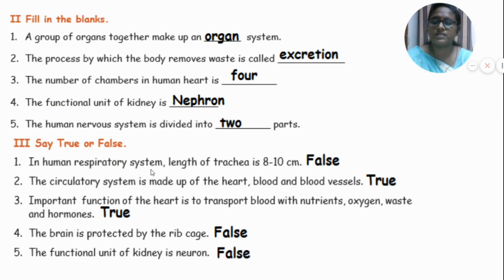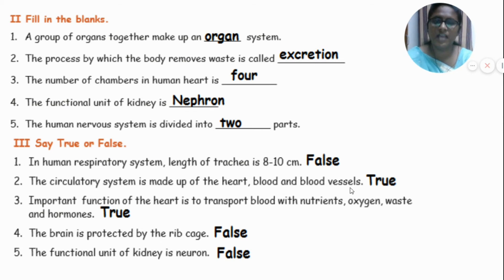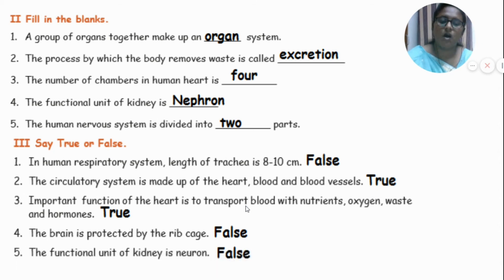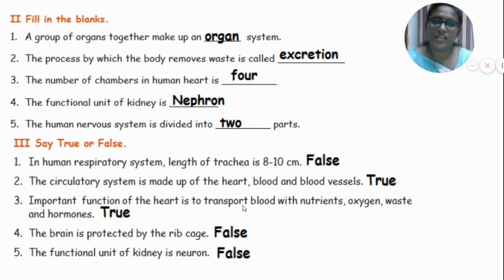Now let's move on to true or false. In the human respiratory system, the length of the trachea is 8 to 10 cm — False. The circulatory system is made up of the heart, blood, and blood vessels — True. The important function of the heart is to transport blood with nutrients, oxygen, waste, and hormones — True. The brain is protected by the ribcage — False. The functional unit of the kidney is neuron — False.